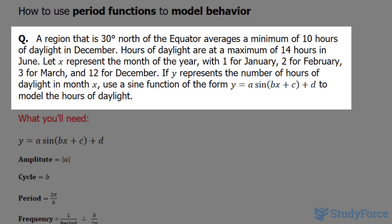Let x represent the month of the year with 1 for January, 2 for February, 3 for March, and 12 for December. If y represents the number of hours of daylight in month x, use a sine function of the form y = a sin(bx + c) + d to model the hours of daylight.